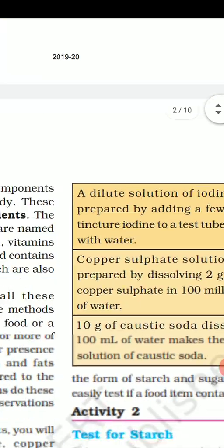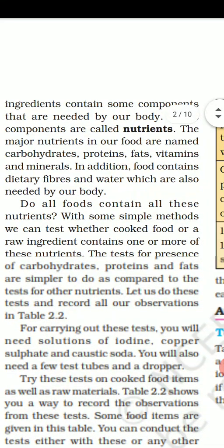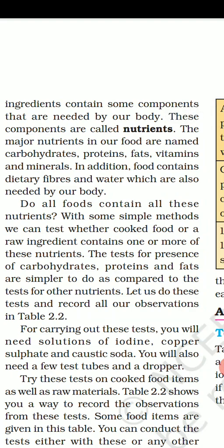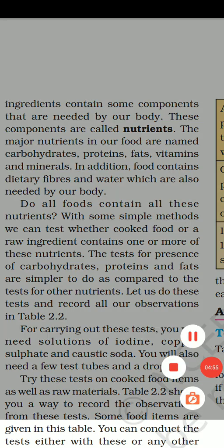The ingredients contain some components that are needed by our body, and these components are called nutrients. Please mark this. There are 2 types of nutrients — major and minor. The major nutrients in our food are carbohydrates, proteins, fats, vitamins, and minerals. In addition, food also contains dietary fibers and water, which are also needed by our body.